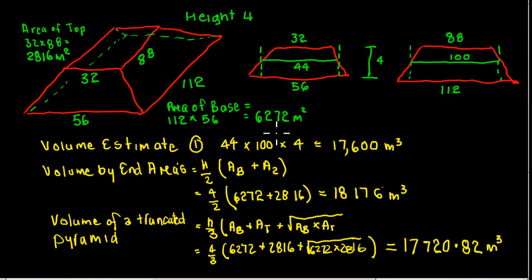So let's look at some various estimation techniques that we could use. Now with the help of the sections there, nice easy one here: we just go 44 by 100 and then multiply that by 4. That gives us a volume of 17,600 cubic meters.